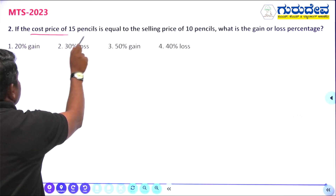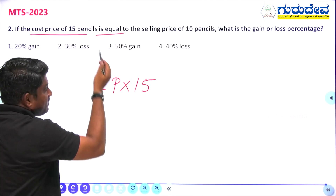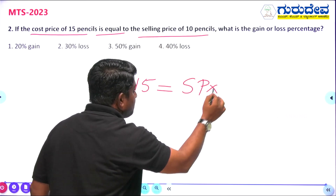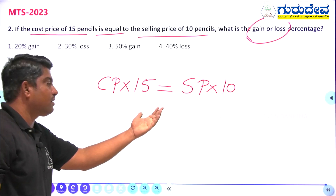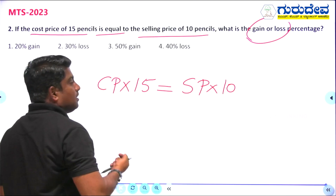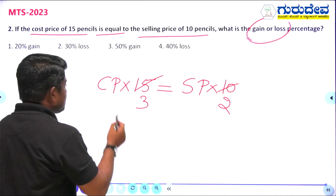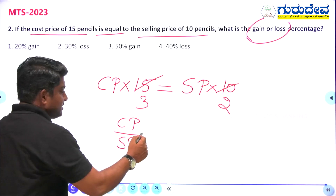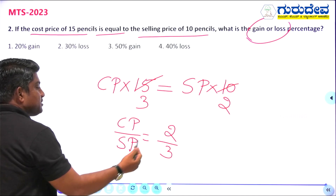Cost price of 15 pencils is equal to selling price of 10 pencils. Both are divisible by 5: 15÷5 = 3, 10÷5 = 2. Taking cost price on the left and selling price on the right, the ratio of cost price to selling price is 2:3.